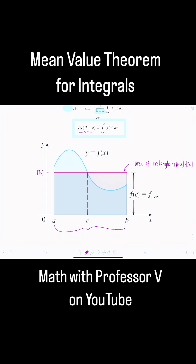Now f of c is the average value of our function and we're saying that we can find some c on the interval such that the average value times the length of the interval is equal to the definite integral from a to b of f of x dx.